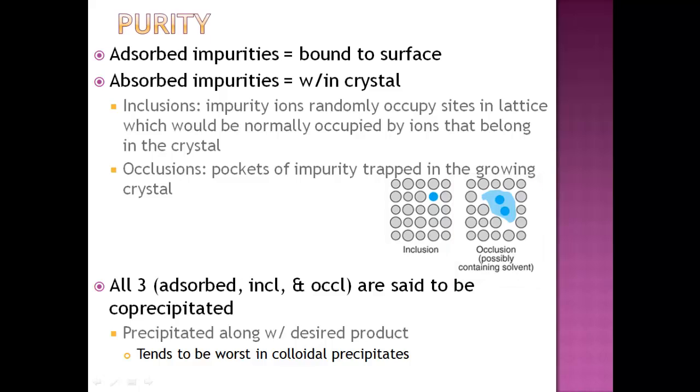So obviously they're both bad, but I would think that occlusions is something that's really bad because you've got a huge gap that's growing inside your crystal, which is not supposed to be there. So all three of these impurities, the adsorbed, the inclusions, and occlusions are said to be co-precipitated. And what that means is just that it's actually precipitated along with the desired product that you're looking for. The book mentions that co-precipitation actually tends to be worse in colloidal precipitates.